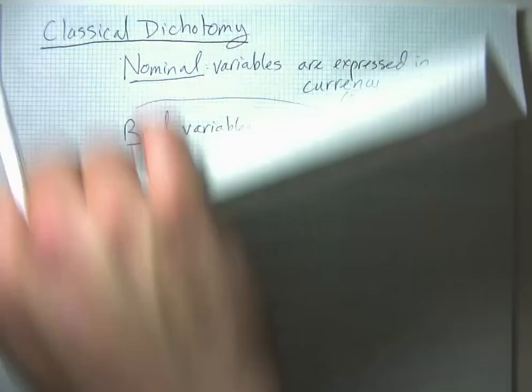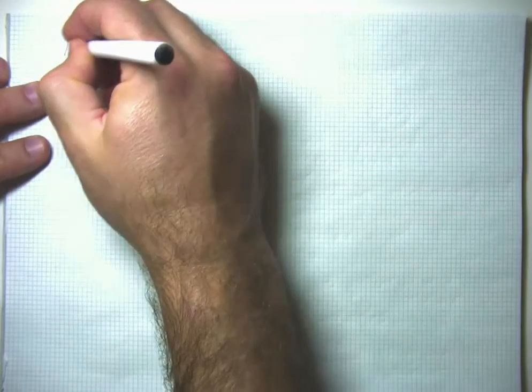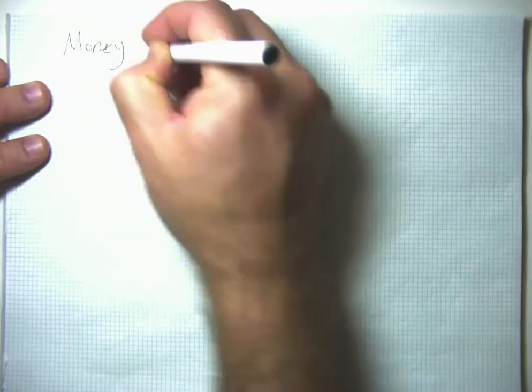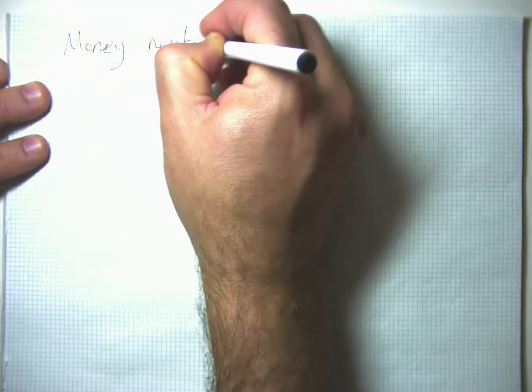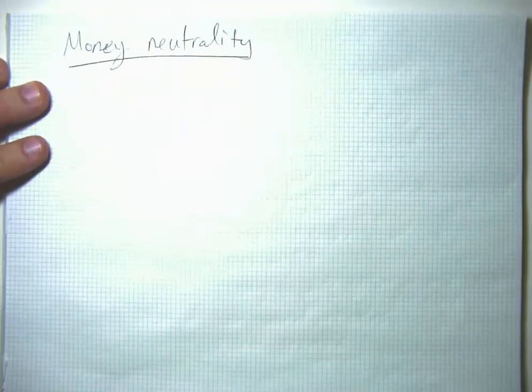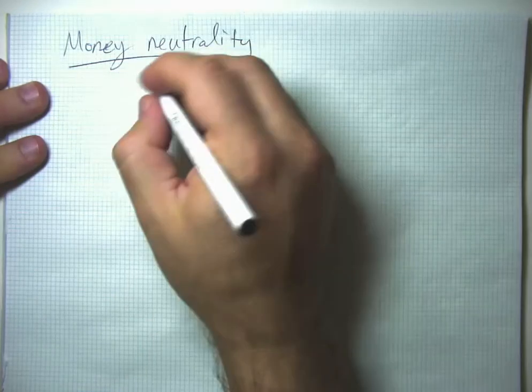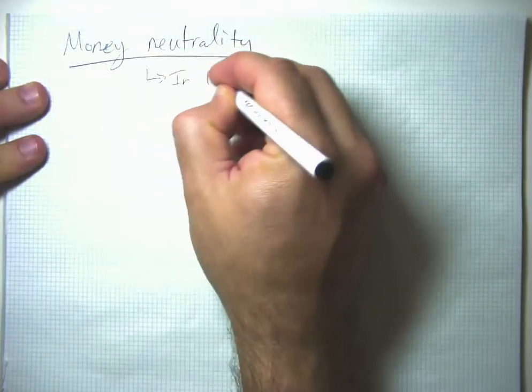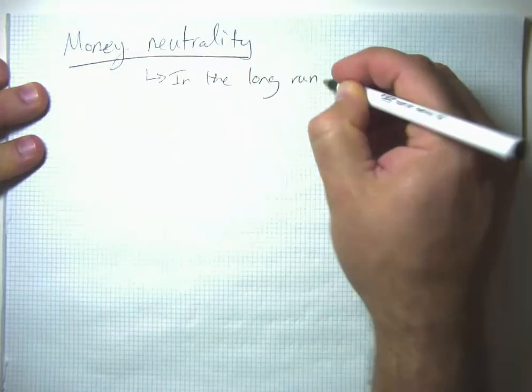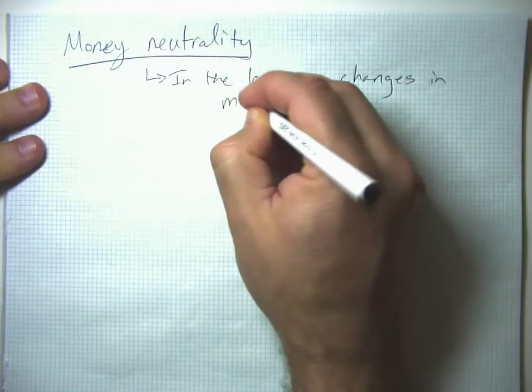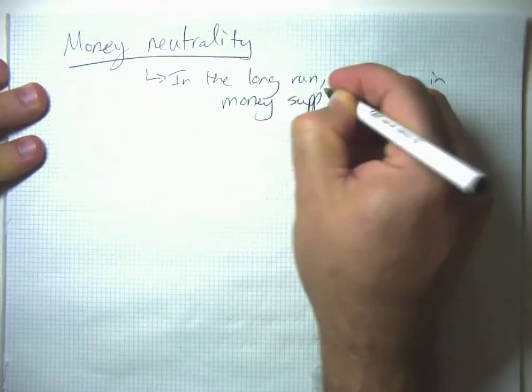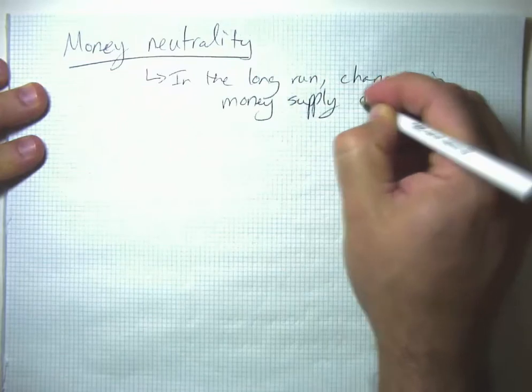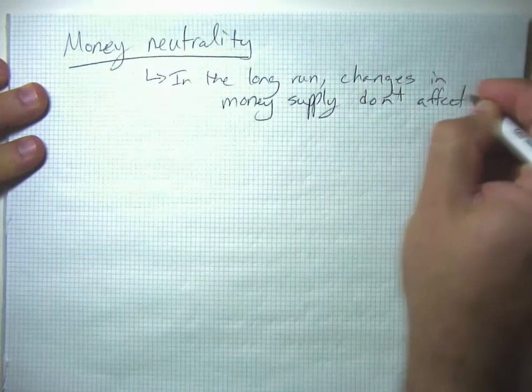This classical dichotomy leads us to what's called money neutrality. Money neutrality is the idea that in the long run, changes in the money supply don't affect real variables.